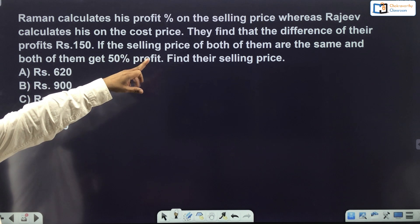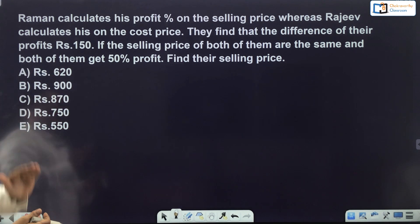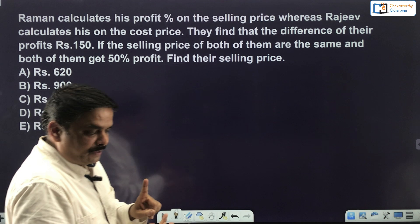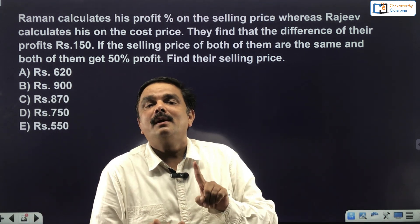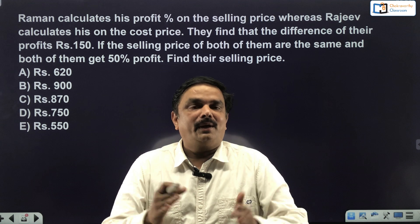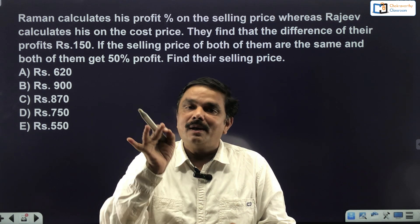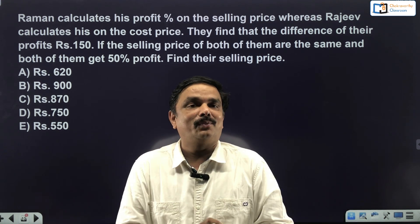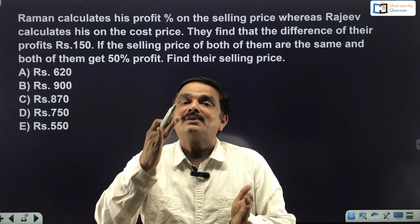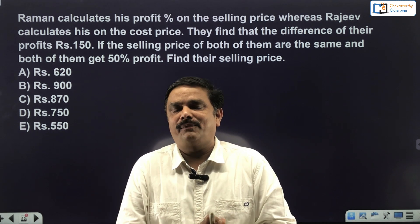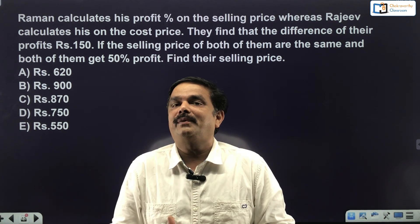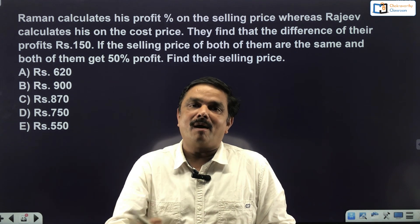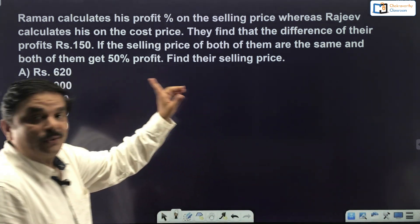Read the question properly: Raman calculates his profit percentage on selling price, whereas Rajiv calculates his profit percent on cost price. One person on selling price, one person on cost price. Generally in profit and loss, profit is calculated on cost price — that is the default — but some questions deliberately say profit is calculated on selling price.